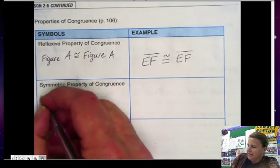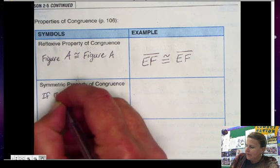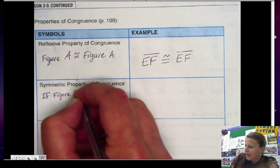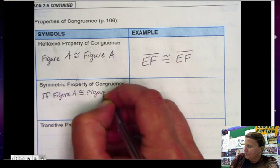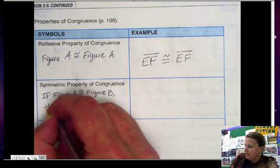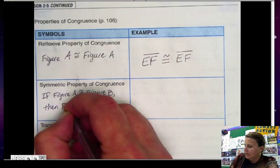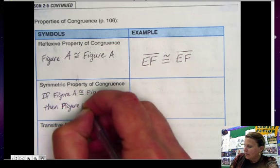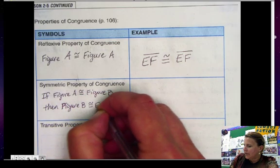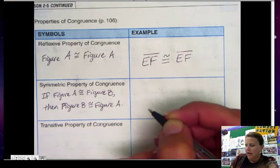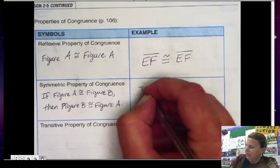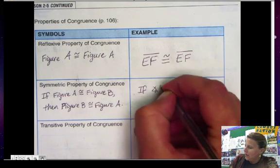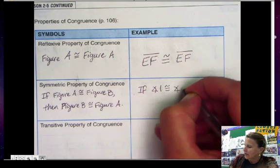The symmetric property of equality says if figure a is congruent to figure b, then figure b is congruent to figure a. So if we were thinking about this maybe in angles, we would say if angle 1 is congruent to angle 1.